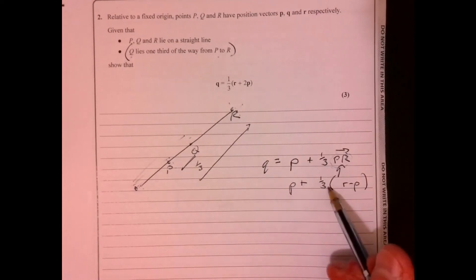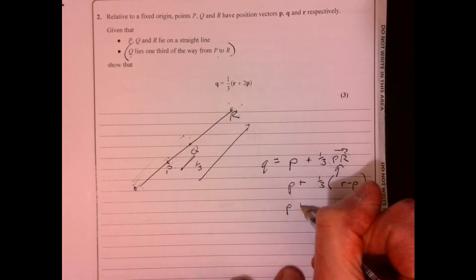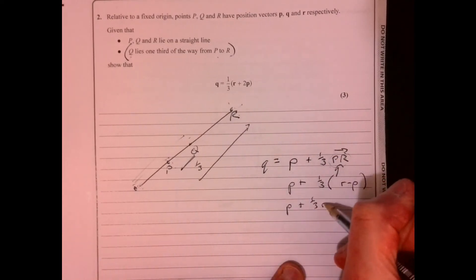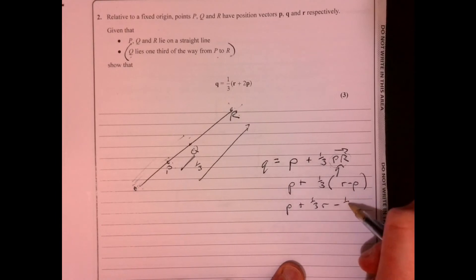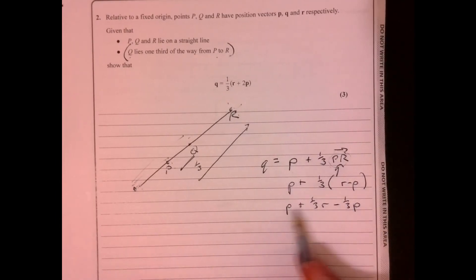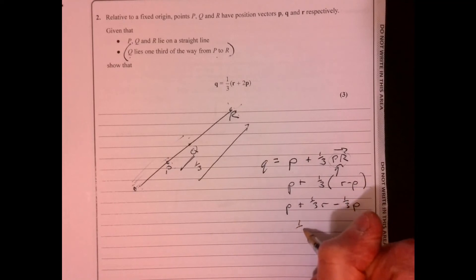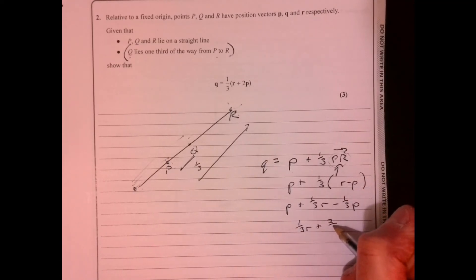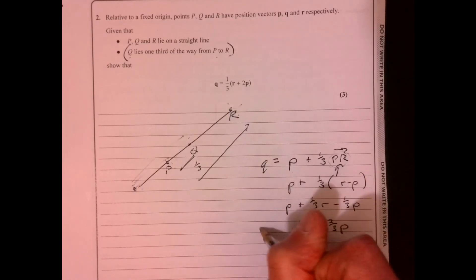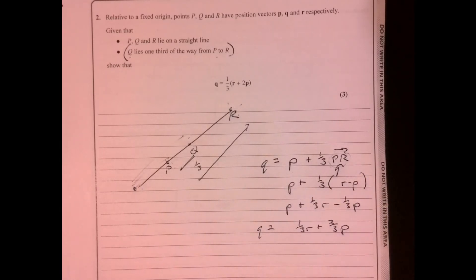And let's tidy this up. Let's see what it gives us. So P plus one third of R, take away one third of P. So that's going to give me one third of R plus two thirds of P. And that's just saying what's equivalent to Q.